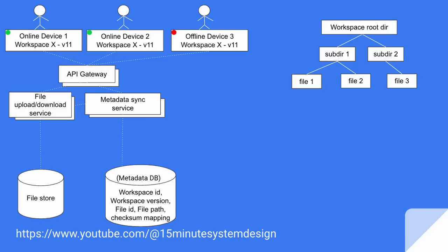Now let's look at a very basic design. Let's say there are three devices, out of which two devices are online and one device is offline. All of these devices are subscribing to the same workspace. And at some point in time, all these devices are in sync and are on version 11. For this workspace, let's say there's one root directory and two sub-directories — one sub-directory having two files and one sub-directory having one file.